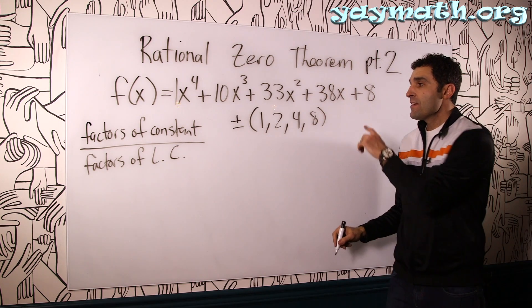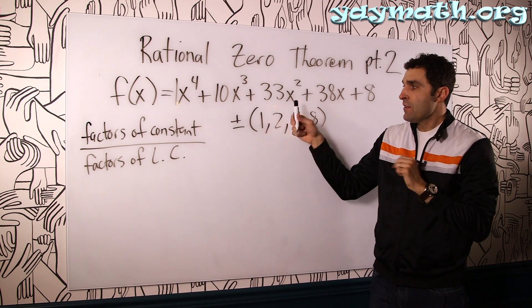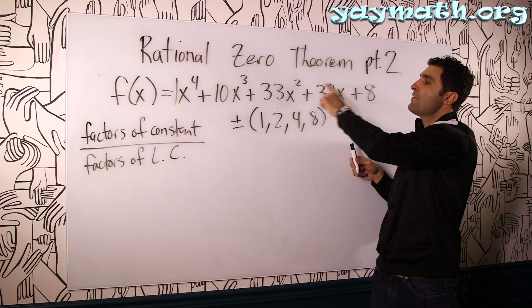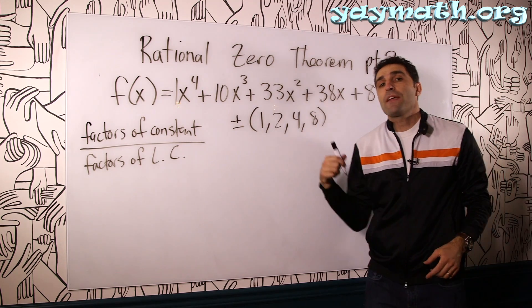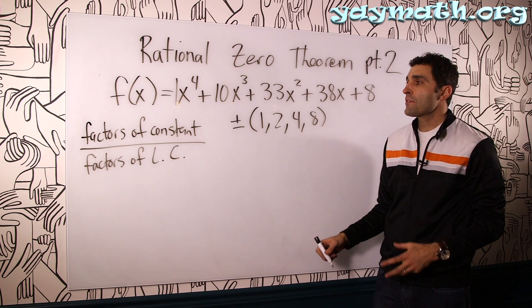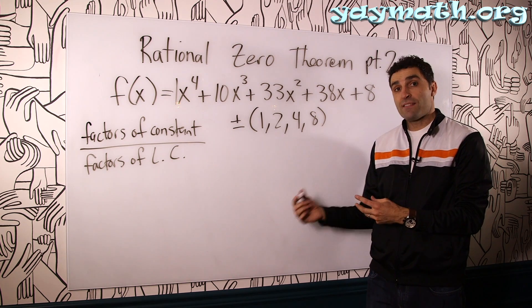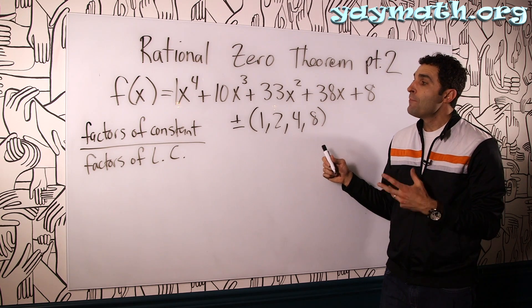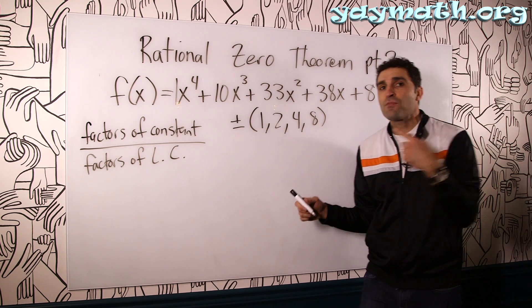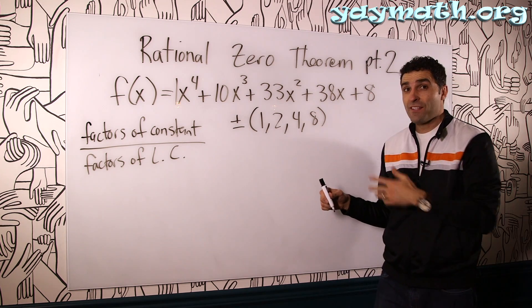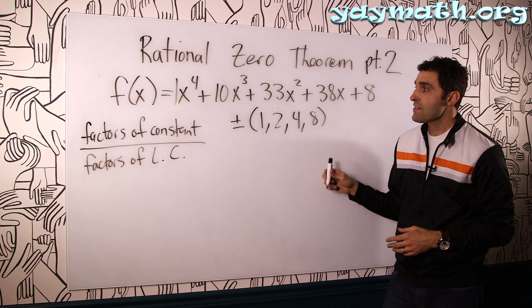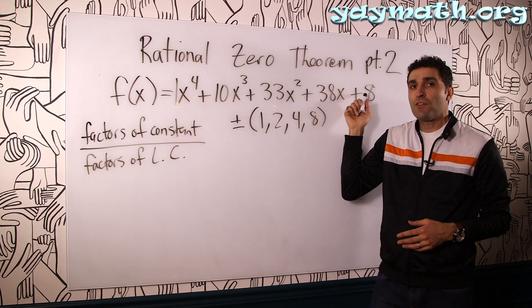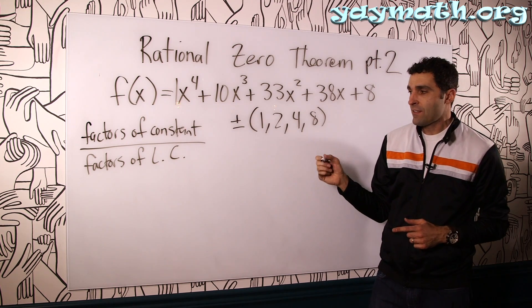Now we could pick one randomly, or pick one, then two, then negative one, negative two, and randomly synthetically divide into here, hoping that the remainder is zero. Therefore, it would be a solution because it divides evenly if we divide and the remainder is zero. But we could actually use other processes that we've learned in previous videos, specifically Descartes' rule of signs. So we're going to use Descartes' rule of signs to help us figure this polynomial out without the aid of a calculator.